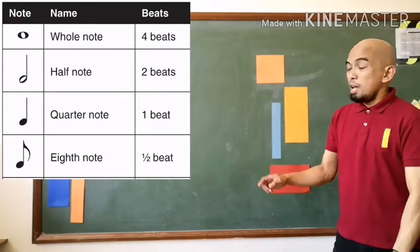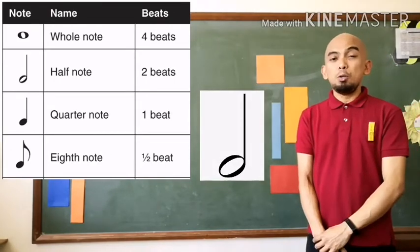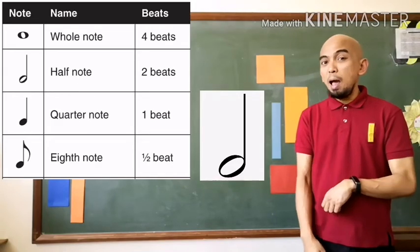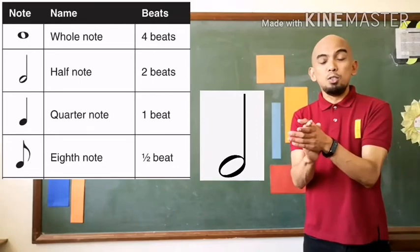The next one is the half note. The half note receives two counts or two beats. If you clap the half note, it goes like this: one, two, one, two.